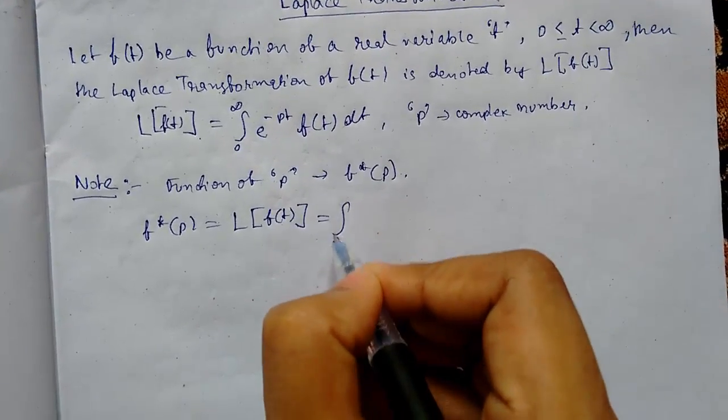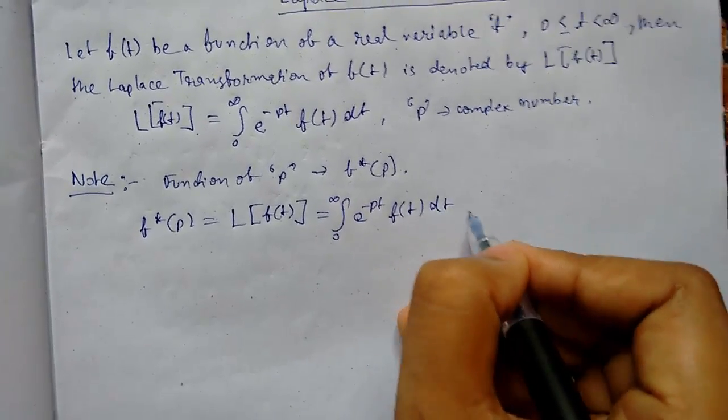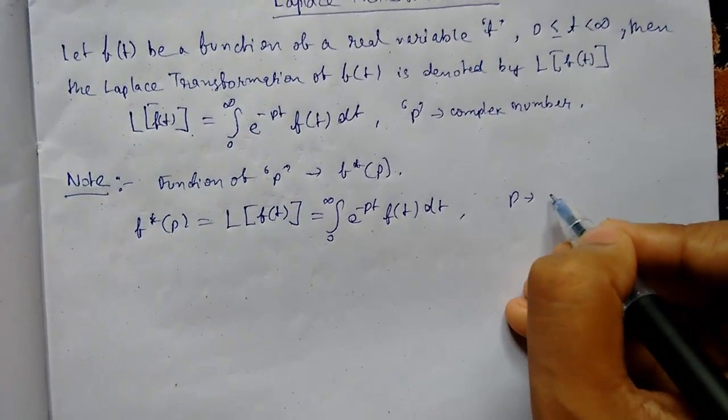This can be written as 0 to infinity e to the power minus pt f(t) dt, where p is the only parameter.